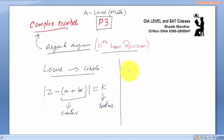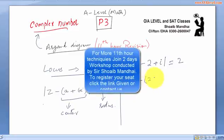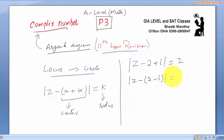For example, if we have an equation like z minus 2, x minus 2 plus i modulus equals 2, we rewrite this equation in general form like z minus 2 minus i bracket close, modulus equals 2.